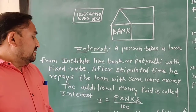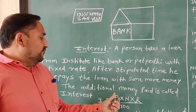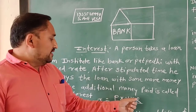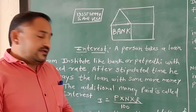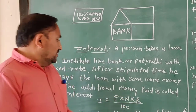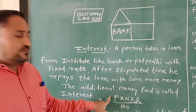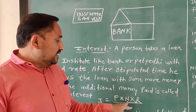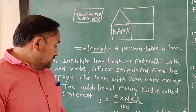We have seen the interest formula: P multiplied by R multiplied by T, divided by 100. Here P is for principal, R for rate of interest, and T for time in years.